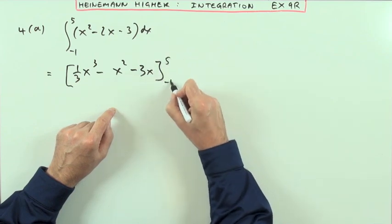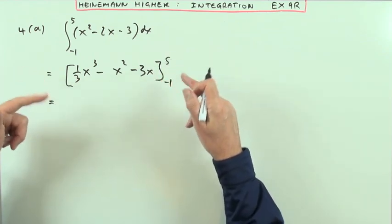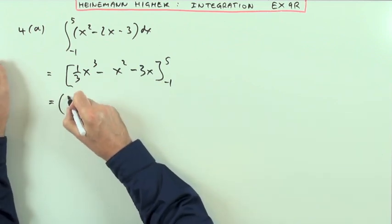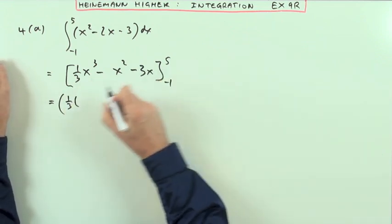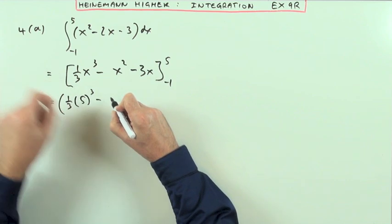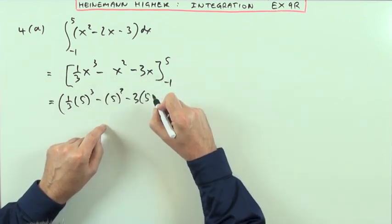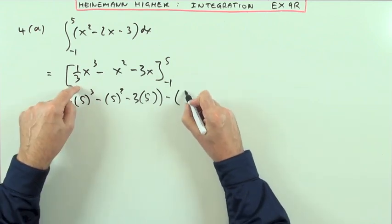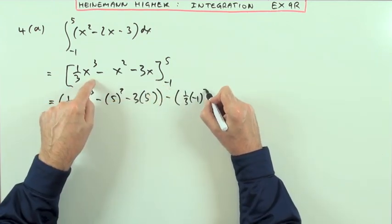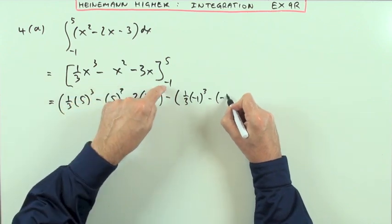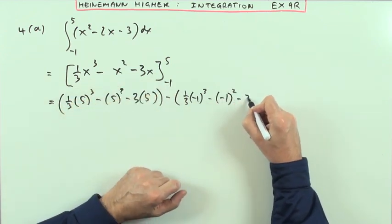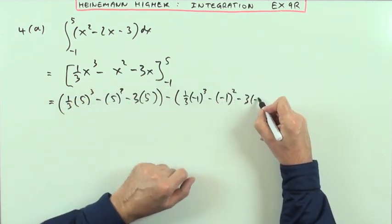Work it out at 5, work it out at negative 1, and the answer is the difference between those two. So I've got a third of 5 cubed minus 5 squared minus 3 times 5, take away a third of negative 1 cubed minus negative 1 squared minus 3 times negative 1.